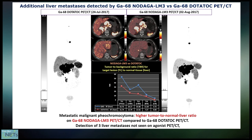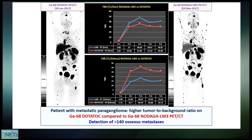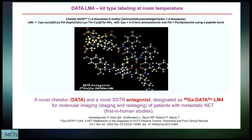And on the right, you see the same patient imaged with Nodaga-LM3 PET-CT, where you can detect also three liver metastases. So the antagonists actually stay longer in the tumor and have higher uptake, as also seen in this patient with a lot of bone metastasis who had a paraganglioma. If you compare on the left the DOTA-TOC PET-CT with the Nodaga-LM3 PET-CT on the right, you see that there are many more lesions detected.